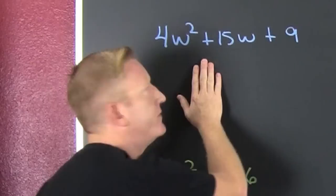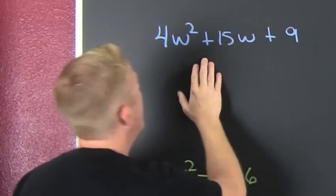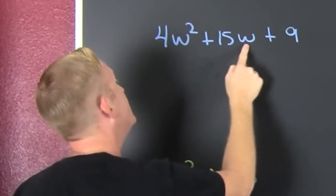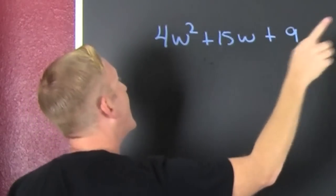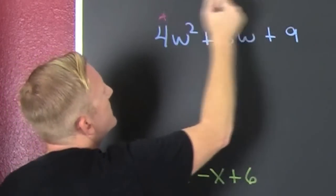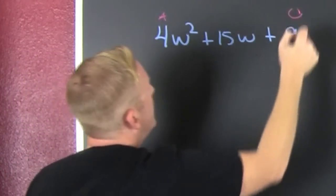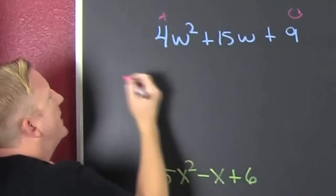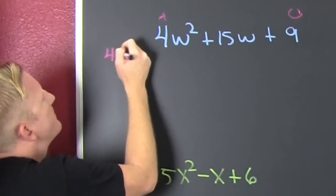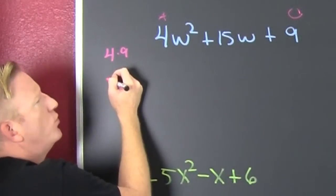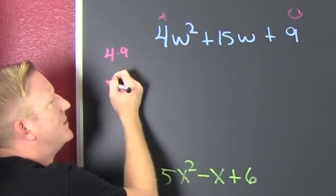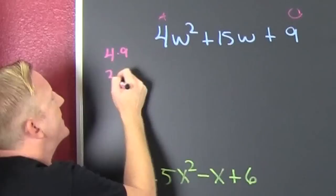Let's use a variety of different methods. I see this is 4w squared plus 15w plus 9. On this one, let's use the AC method. That's where I take the product of the leading and the lagging — my 4 times my 9. And what is 4 times 9? 36.